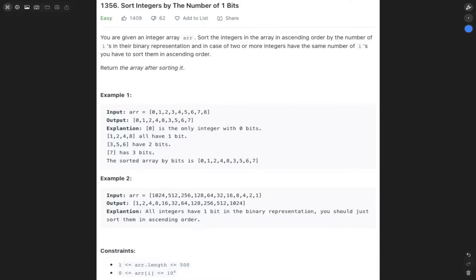Welcome back to Agile.js. Today's question is LeetCode 1356, Sort Integers by the Number of One Bits. We're given an integer array and we need to sort the integers in the array in ascending order by the number of ones in their binary representation. In case of two or more integers having the same number of ones, you have to sort them in ascending order and then return the array.